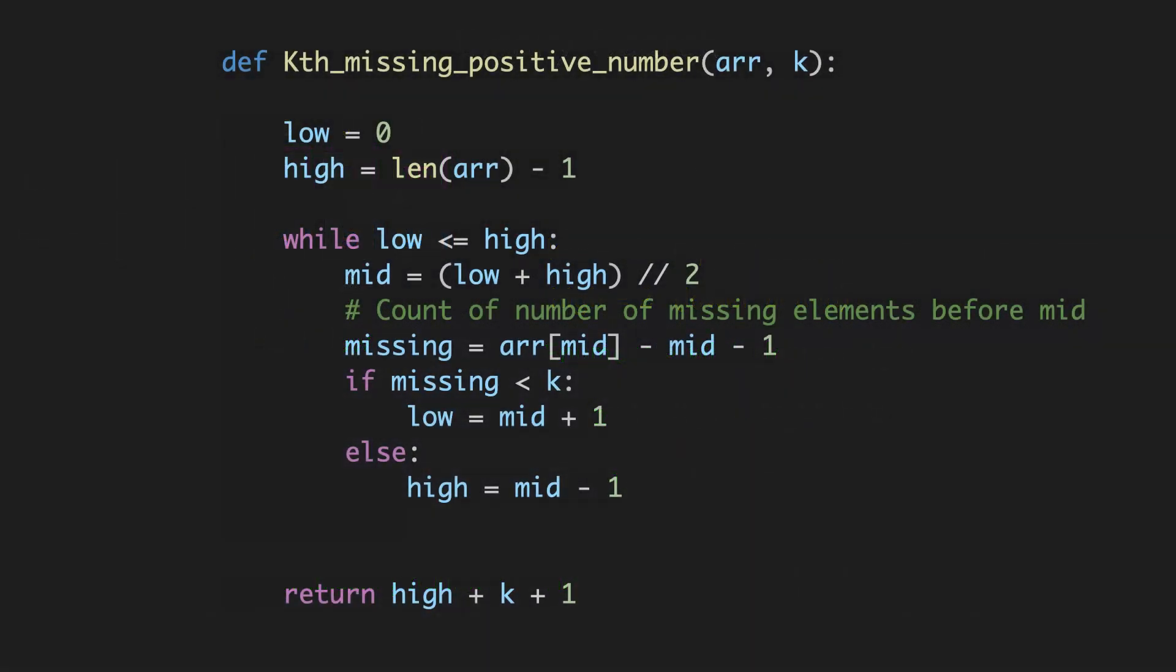So hopefully the code now is fairly straightforward to understand. In our function, we'll first initialize the search boundaries with low and high variables. Next, we'll enumerate while low is less than equal to high, and the first thing we do inside the loop is calculate mid. We'll calculate the count of missing elements before mid. If the count of missing elements before mid is less than k, we'll increment low to mid plus 1. Else, we'll decrement high to mid minus 1. And finally, we'll return high + k + 1 as the kth missing positive number.